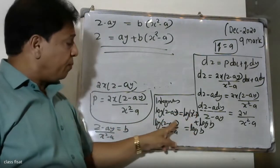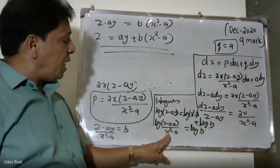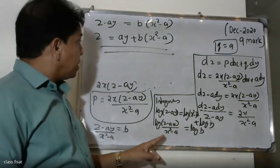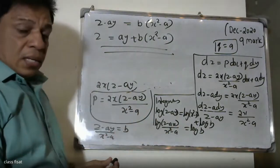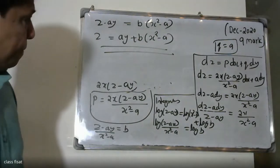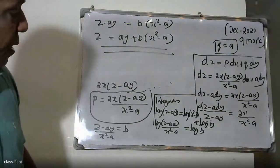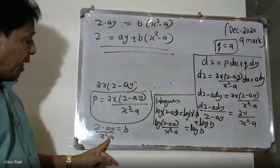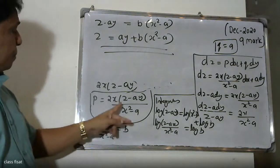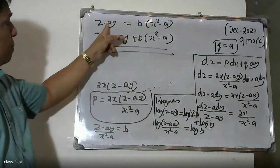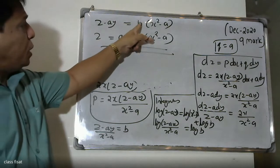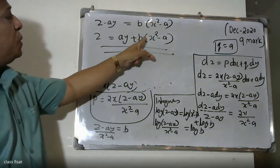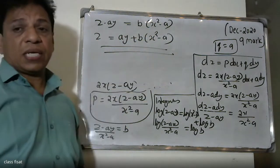So log(z minus ay) divided by (x squared minus a) equals log b. Cross-multiplying: z minus ay equals b into (x squared minus a). This is the final answer: z equals ay plus b(x squared minus a), where a and b are arbitrary constants.